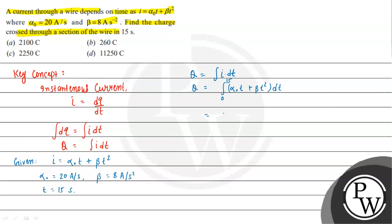When we integrate individually, this equals α₀t²/2 + βt³/3, with limits from 0 to 15. We use the formula: integration of t^n dt = t^(n+1)/(n+1). This is a definite integral, so we apply the upper and lower limits.